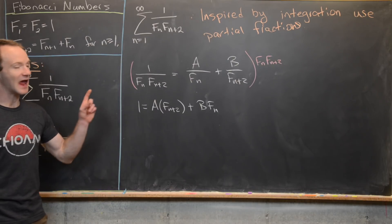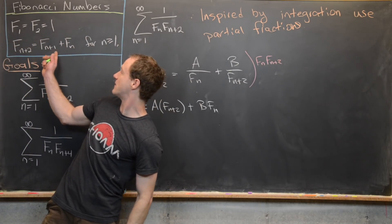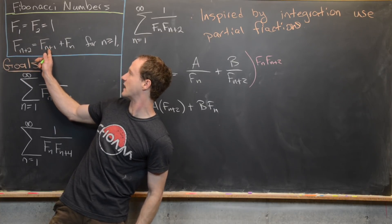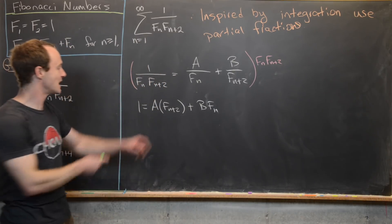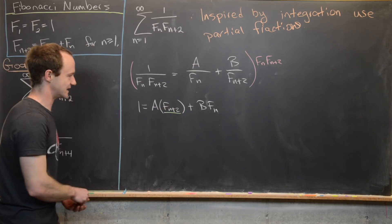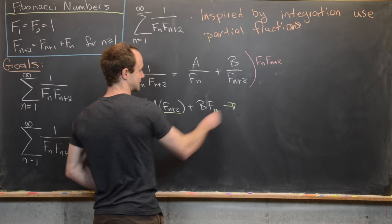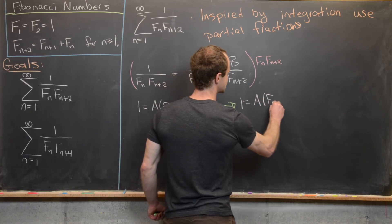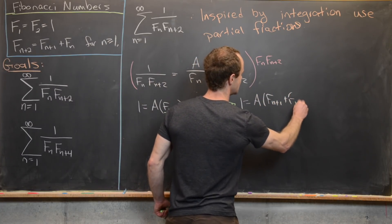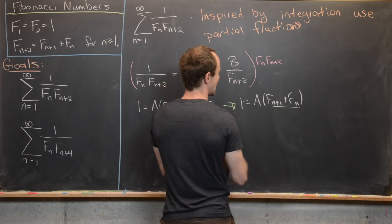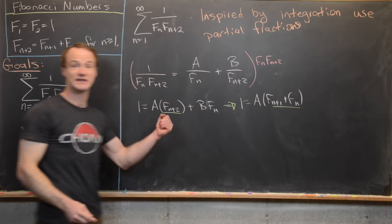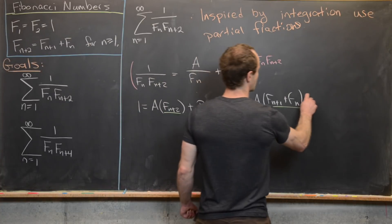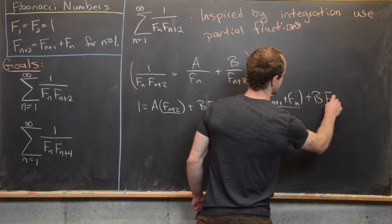Now we look to see if there's anything we can do to combine terms. Because we have the Fibonacci recursion, the (n+2)th term can be written in terms of the (n+1)th and nth terms. Applying this gives us 1 = A(f_{n+1} + f_n) + B · f_n, replacing f_{n+2} using the recurrence.